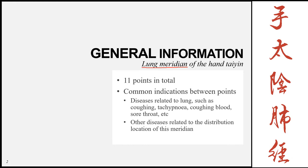Secondly, the name tells us that this meridian is on the hand. Then 'Tai Yin' tells us that it's a Yin meridian, and the 'Tai' part tells us it's the most Yin of all three meridians. Thinking back to the introduction lectures, the Yin meridians flow on the medial aspect of the arm, so we already know that this meridian will be on the medial aspect of the arm.